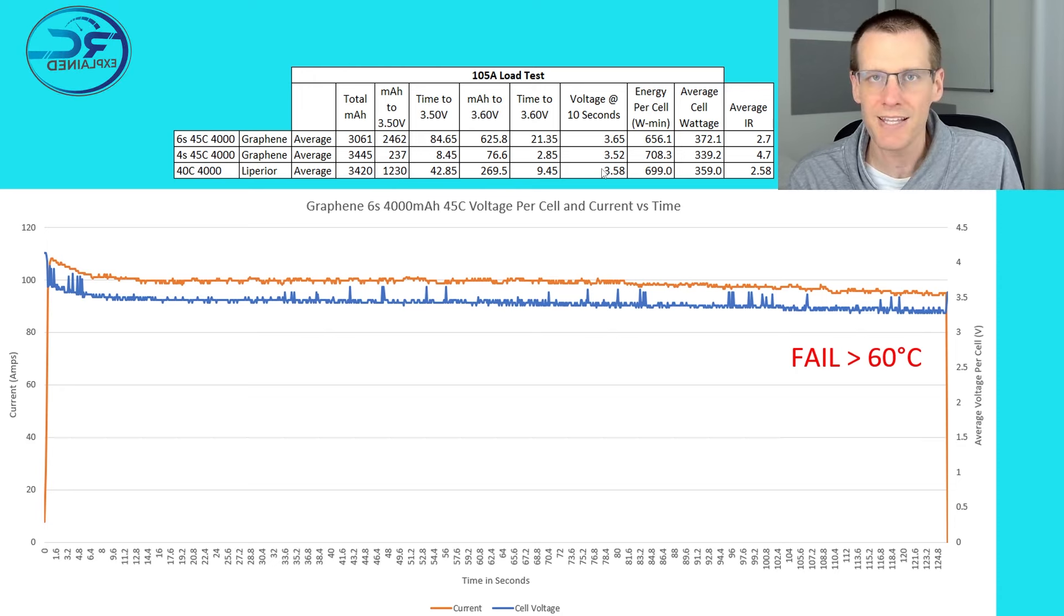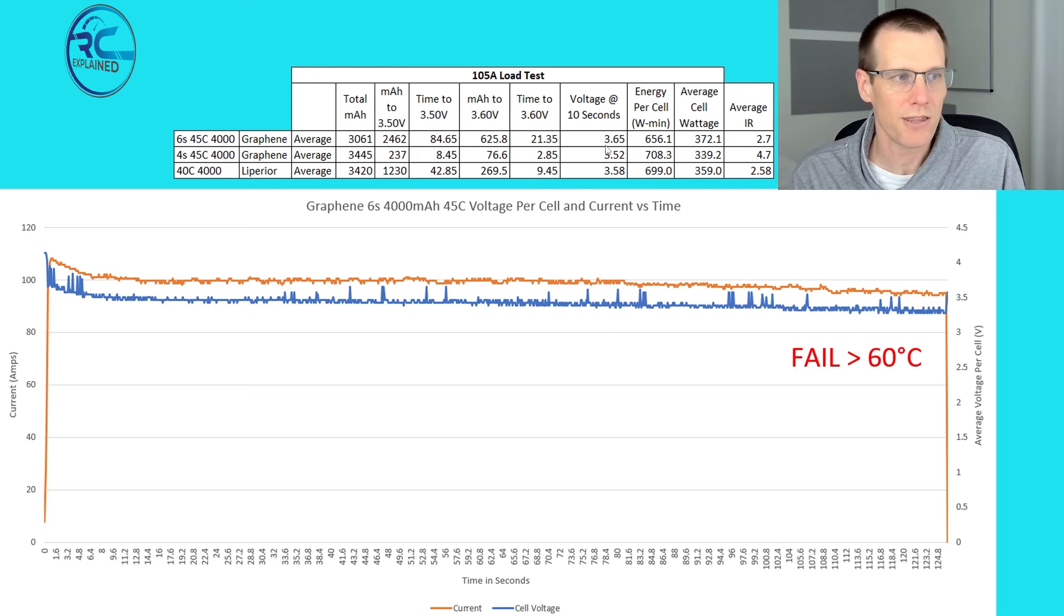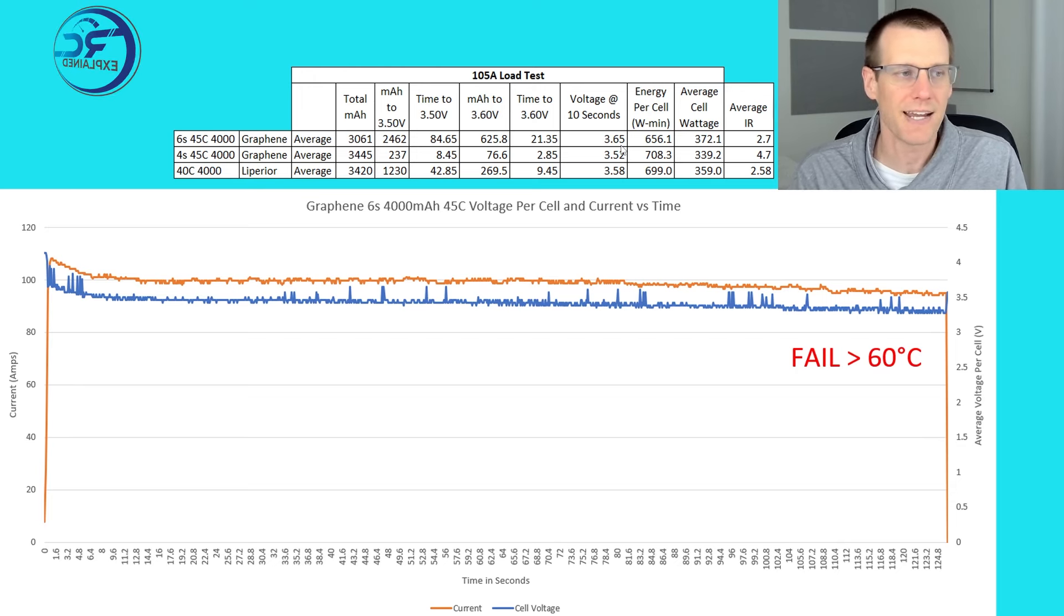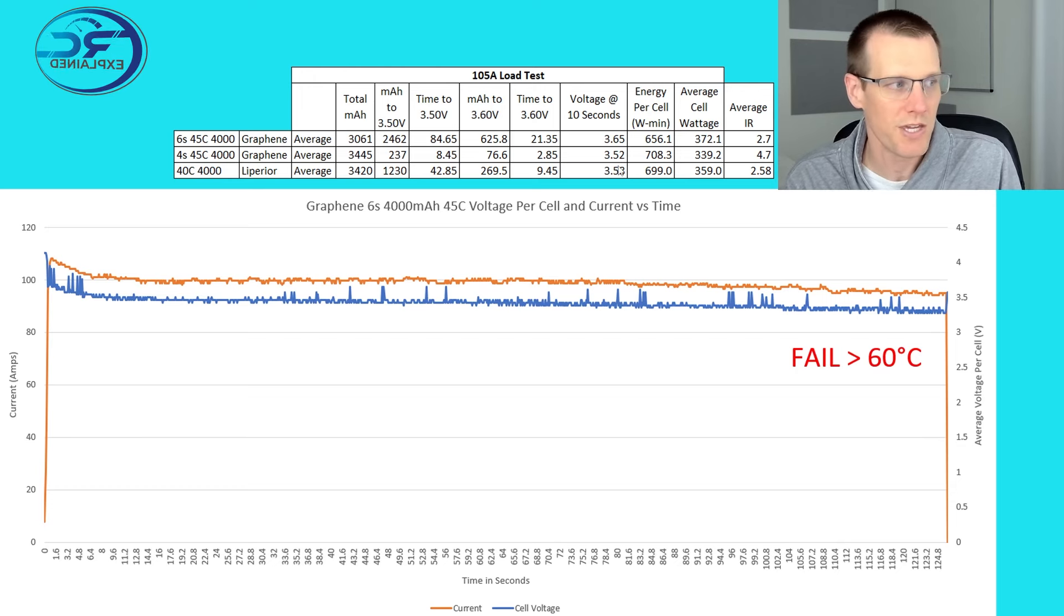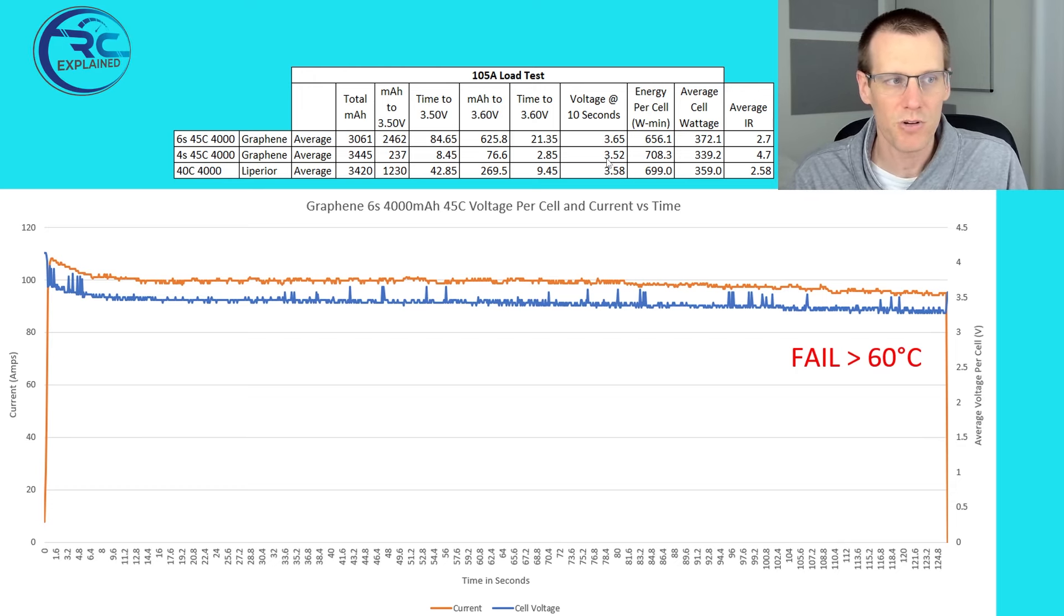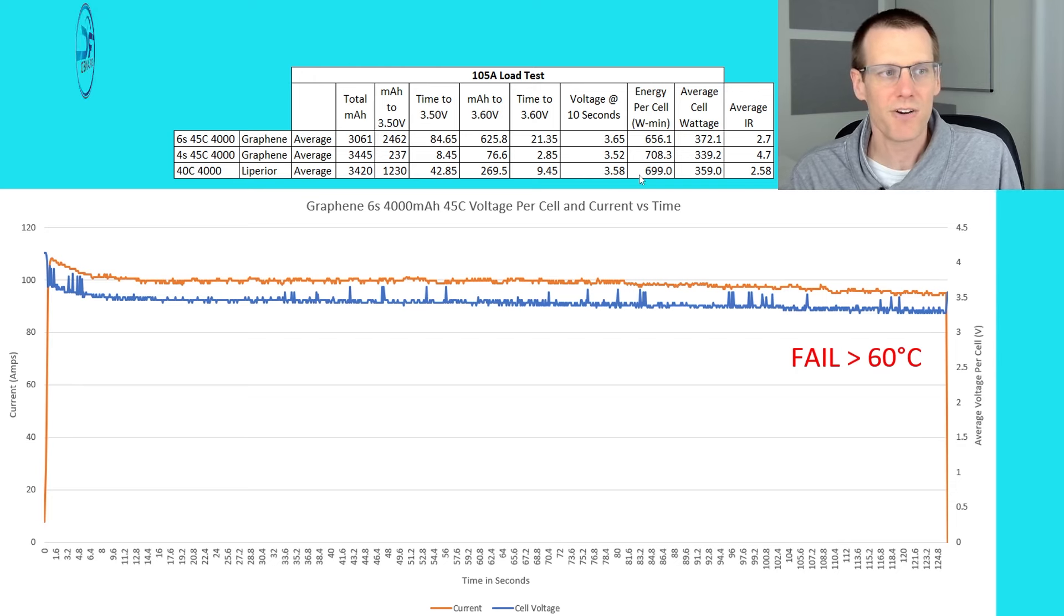Now when we look at the voltage at the 10 second mark, this again tells us a story. The graphene was at 3.65 volts, which held up pretty good in terms of the average voltage at that 10 second mark, compared with the 4S at 3.52, which is rather weak, and then the Liberia at 3.58. So very interesting to see these types of results.